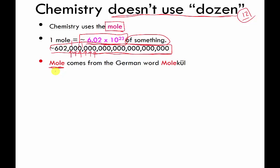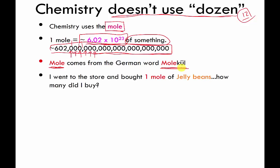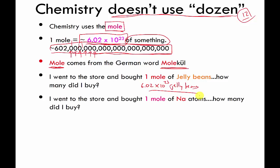The mole does not refer to the furry creature under your lawn — it comes from the German word for molecule. Here come the drills. I went to the store and bought a mole of jelly beans — how many jelly beans did I buy? It's going to be 6.02×10²³ jelly beans. This may seem silly, but I'm just trying to get you accustomed to this number. I bought one mole of sodium atoms — how many? I bought 6.02×10²³ sodium atoms.